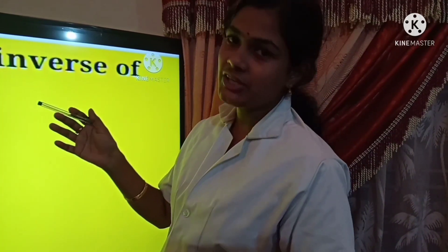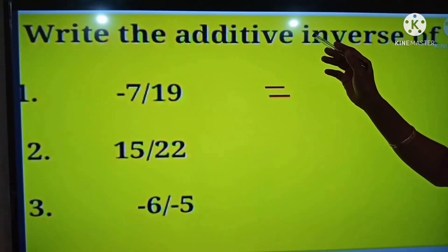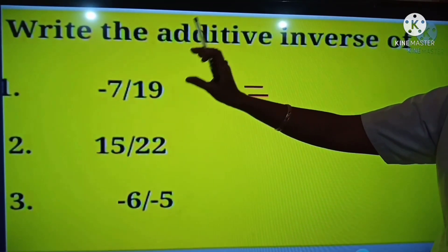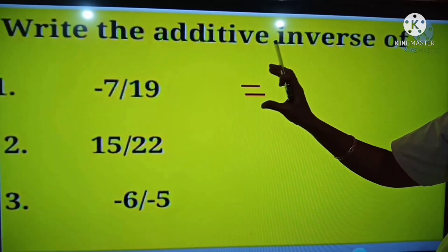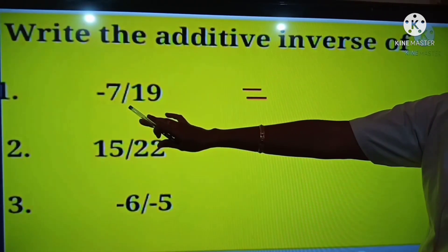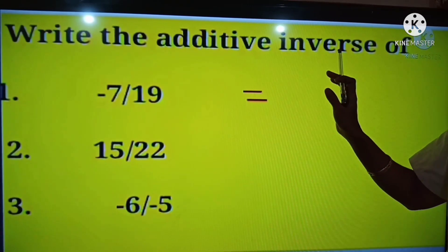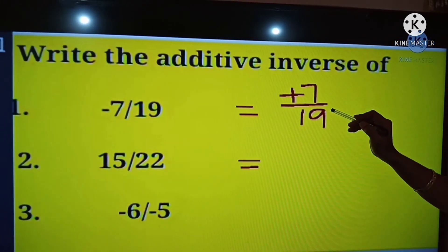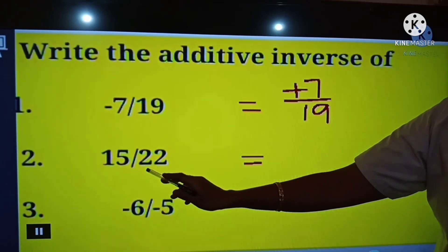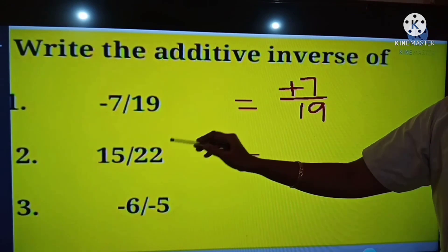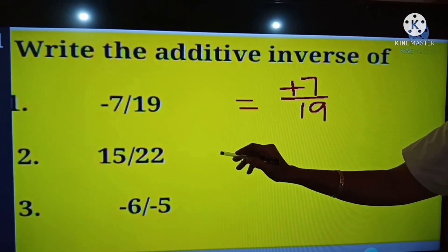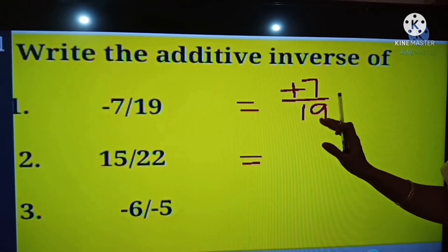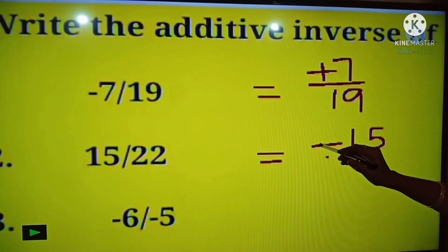Let's see some examples for additive inverse. Write the additive inverse. First question: minus 7 by 19. Which number when added to minus 7 by 19 gives 0? So the additive inverse of minus 7 by 19 is plus 7 by 19. Next: 15 by 22. This is positive, so which number when added to 15 by 22 gives 0? We write the negative of this number. Our answer is minus 15 by 22.